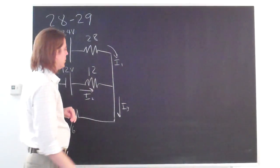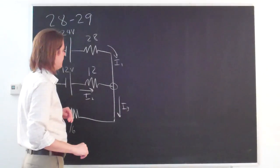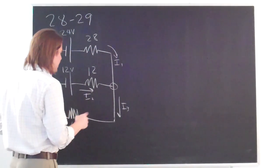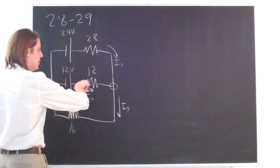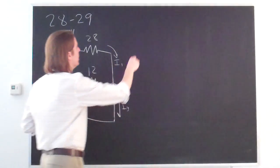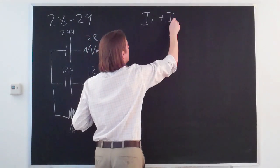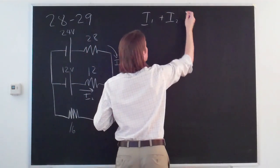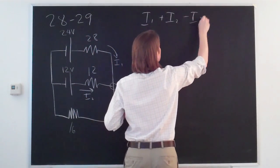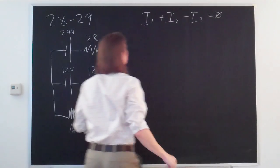Alright, so the first rule is the junction rule. Let's look at this junction here. We have I1 and I2 going in to the junction and I3 coming out. So we have I1 plus I2 minus I3 equals zero.